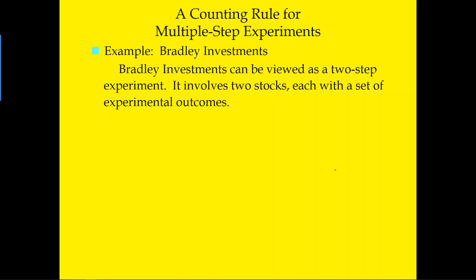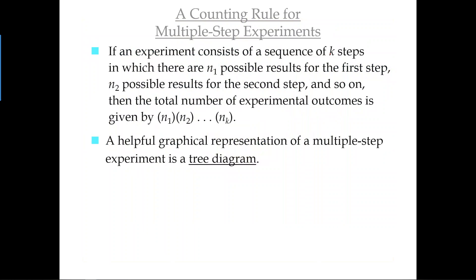Let's apply this to the Bradley investment. We can think of owning two stocks as a two-step experiment: owning Markell Oil and owning Coin Mining, so k equals 2. In the first step we have 4 possible outcomes; in the second step we have 2 possible outcomes. Therefore 4 times 2 equals 8 — we have 8 possible outcomes from this portfolio.